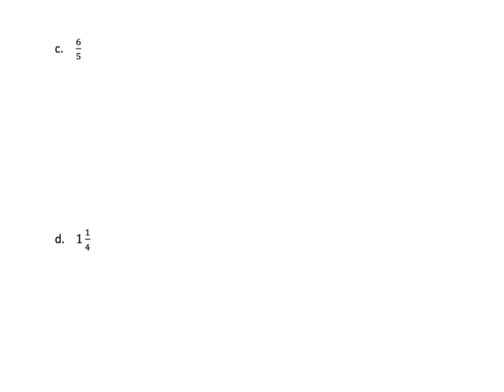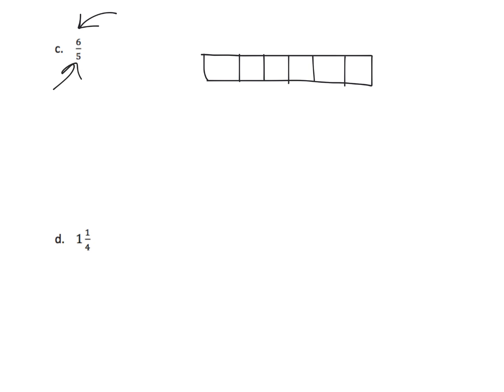The last example — the reason we go through this is because we want students to learn how to visualize fractions. When we're drawing six-fifths, we want students to visualize this as something larger than one. We start by drawing six pieces because the numerator says six. The denominator is five, meaning one whole ends after five pieces.